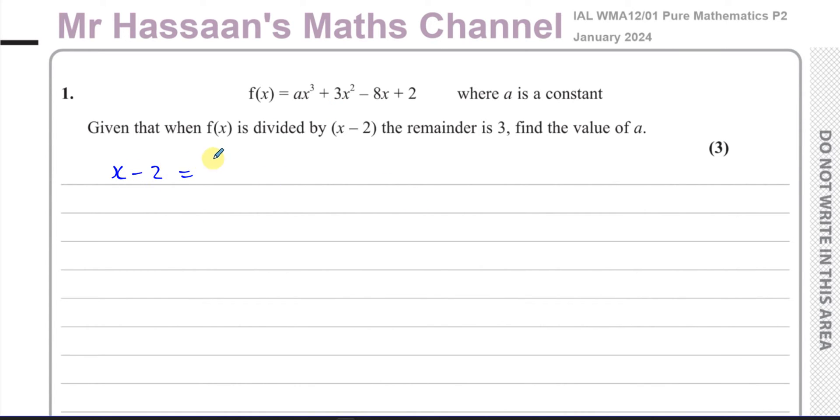When you put inside this function whatever makes this bracket 0, which is going to be x = 2, if the remainder is 3, then f(2) has to equal 3. When I replace the x with 2, when I replace the x with whatever makes this bracket become 0 in the original function, then what comes out is the remainder.